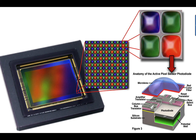The pixels are arranged in groups of four: one red pixel, one blue pixel, and two green pixels. Just like there are three types of cones in the retina, there are three types of light sensors on the CCD. Therefore, the CCD was made to simulate the way the human eye sees. Camera sensors also have twice as many green pixels to mimic the human eye, because the human eye is most sensitive to green light.